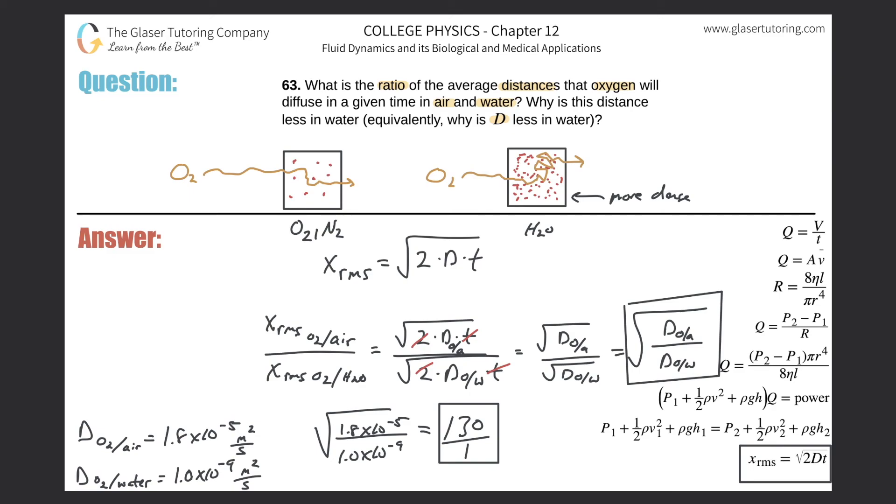So why is this distance less in water? Well, because water is more dense. The higher the density, the more particles there are per unit volume. The more particles there are, the harder it will be for oxygen to diffuse through because it keeps bashing into other molecules. This should make sense. If you think about it, even in terms of a crowd - you go to a concert by the stage, it looks like this. How hard is it to get to the front of that stage? Pretty darn hard.